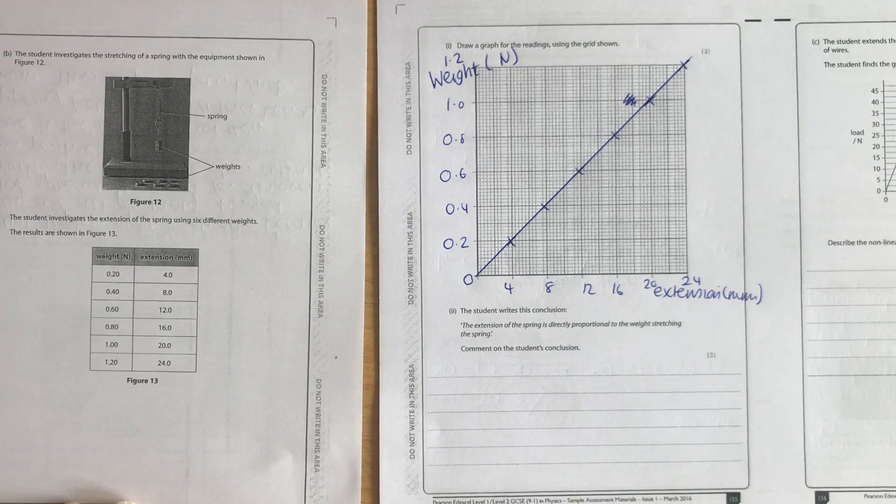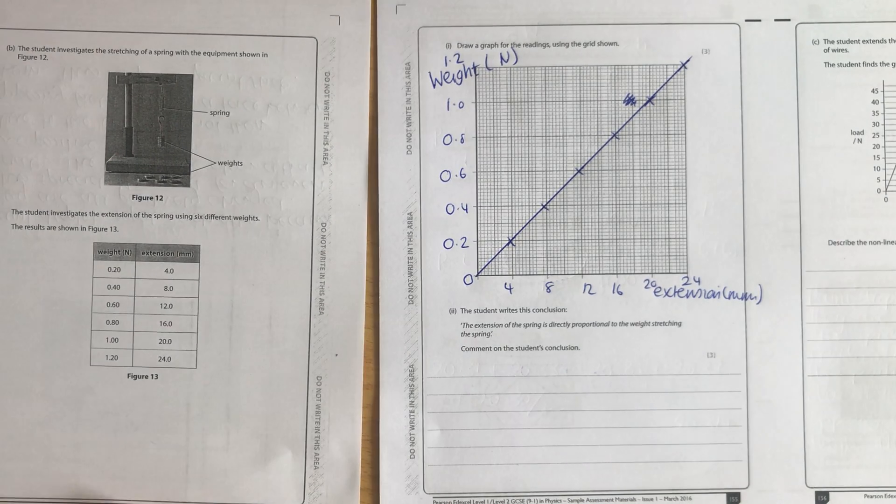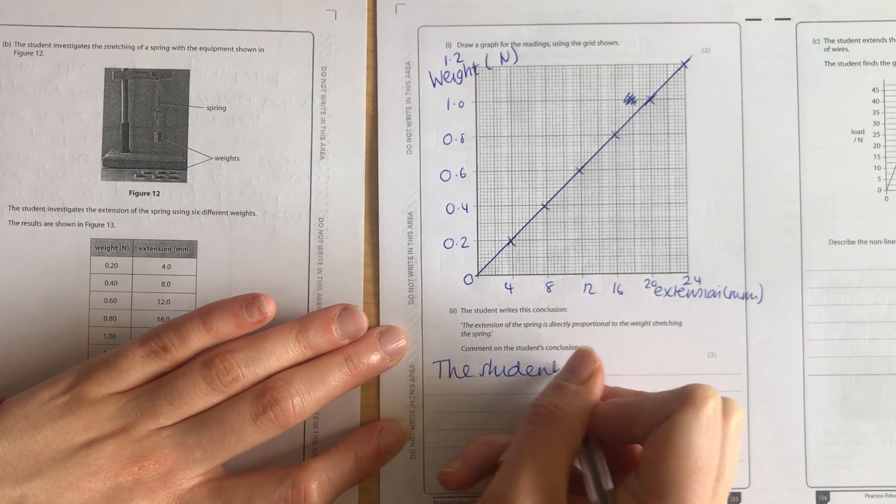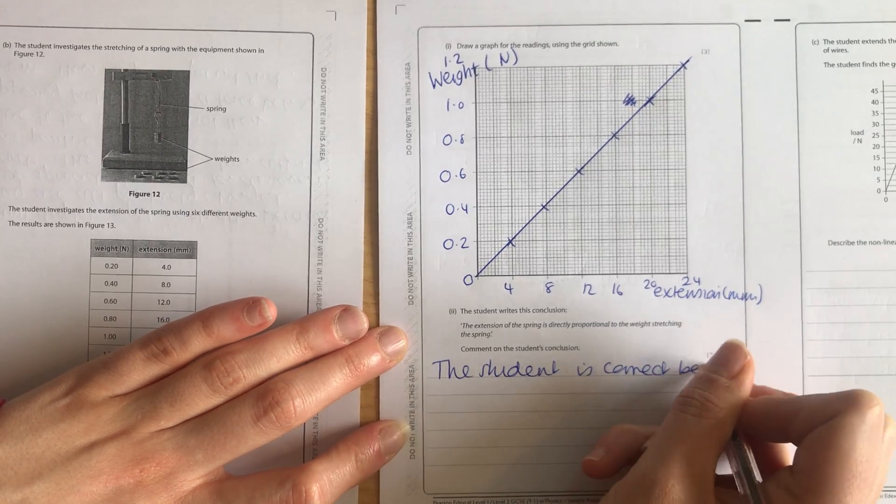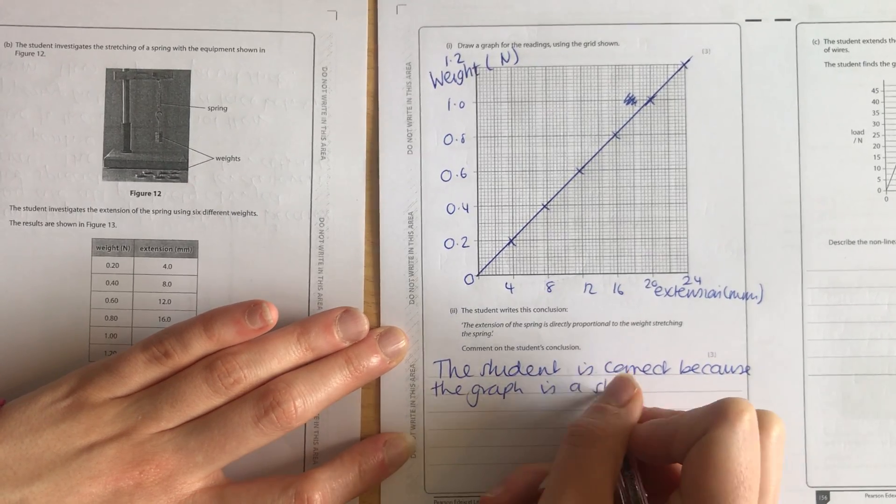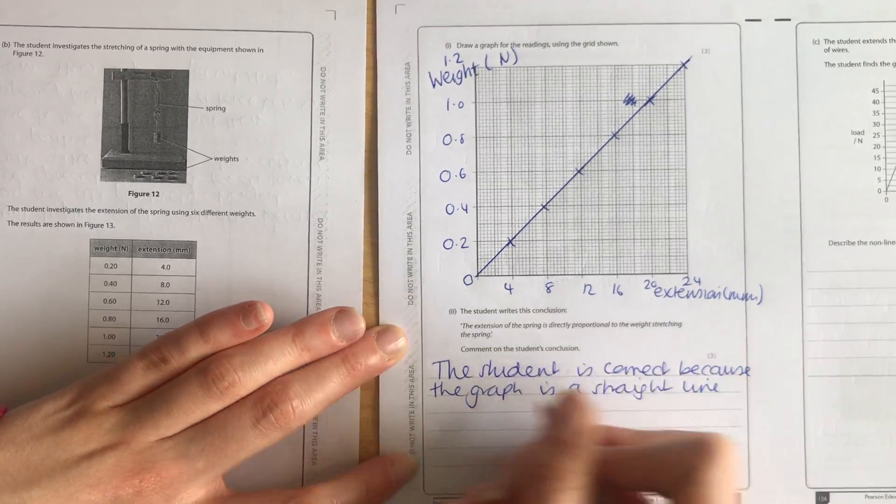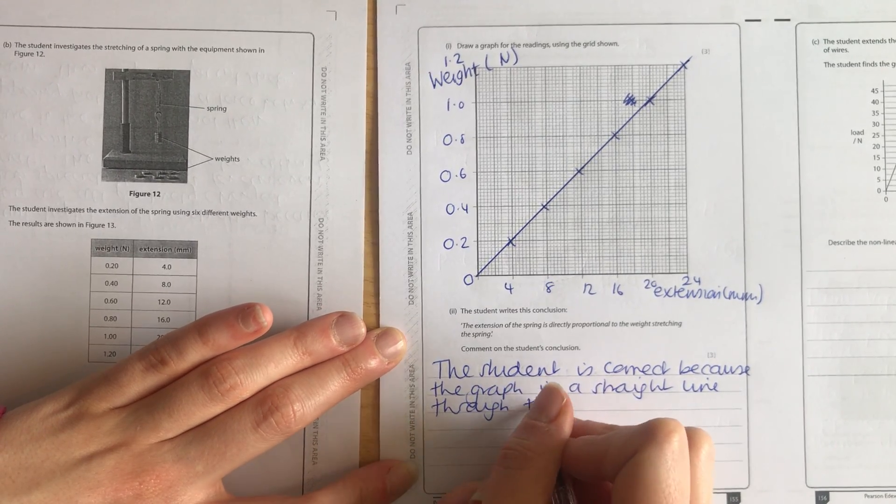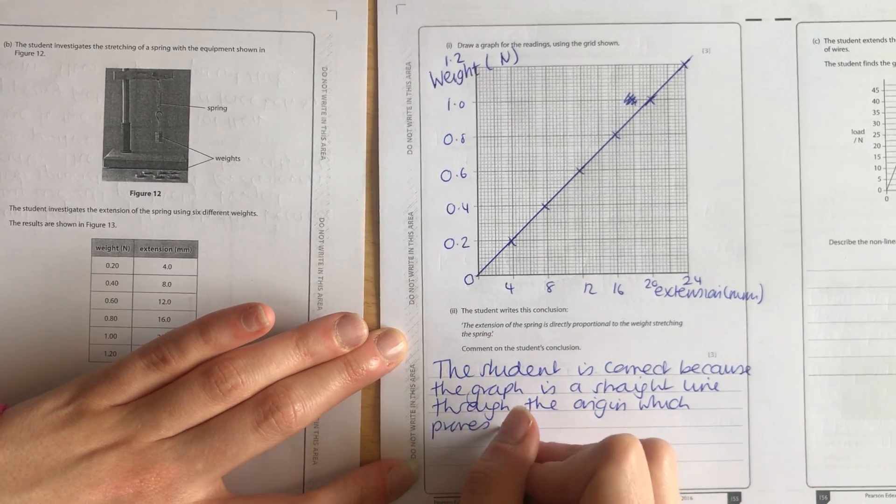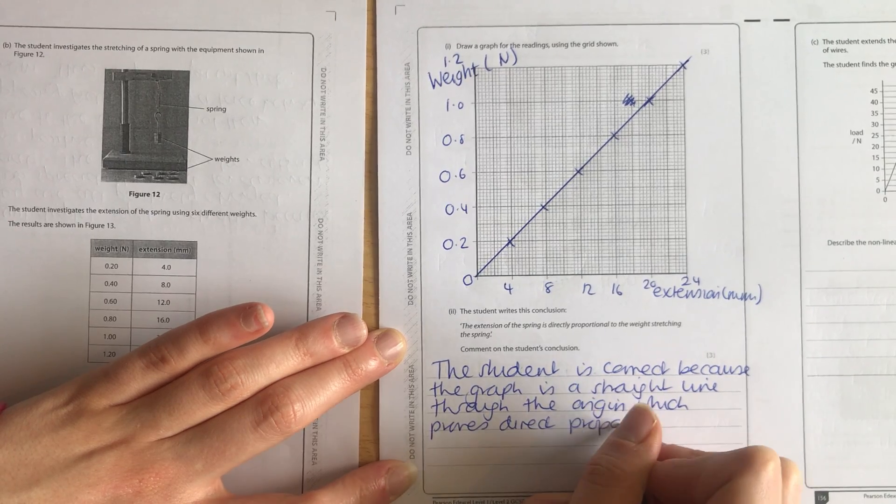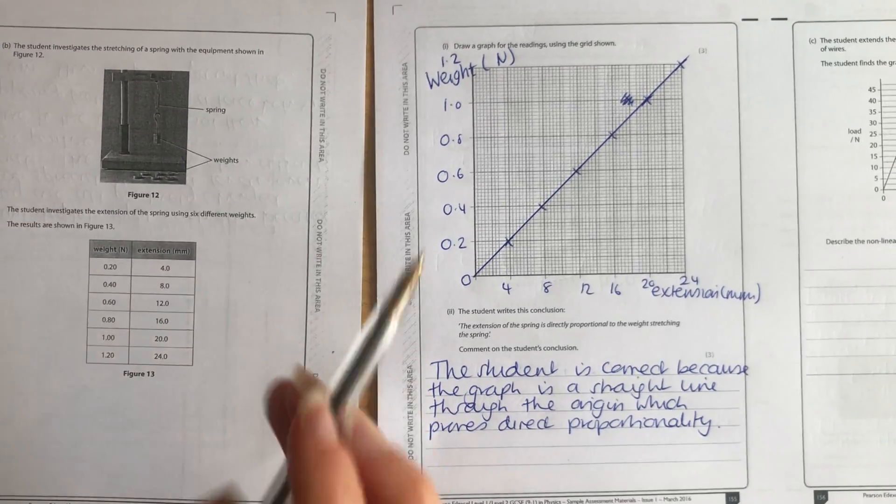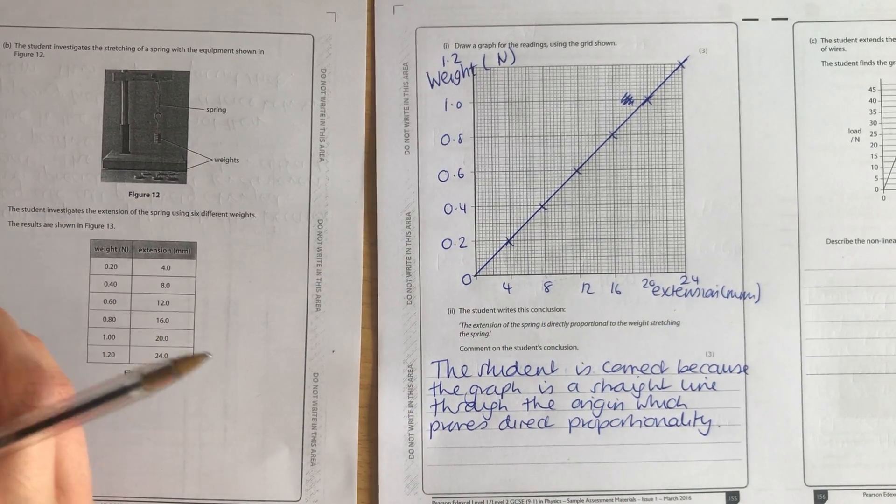The student writes this conclusion: The extension of the spring is directly proportional to the weight stretching the spring. Comment on the student's conclusion. The student is correct because the graph is a straight line through the origin, which proves direct proportionality. Anytime you've got a straight line through the origin, you're saying that the x and y variables are directly proportional to each other.